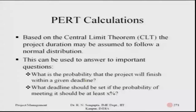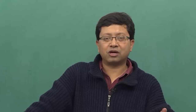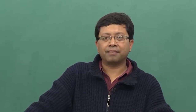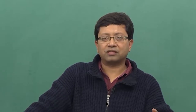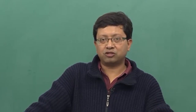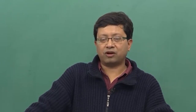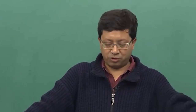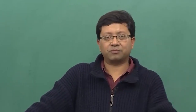Based on the central limit theorem, the project duration may be assumed to follow a normal distribution. Although we have been using the beta distribution for individual activity durations, repeated simulation of activity sets shows that the overall project duration converges to a normal distribution. This is a very important concept in statistics.